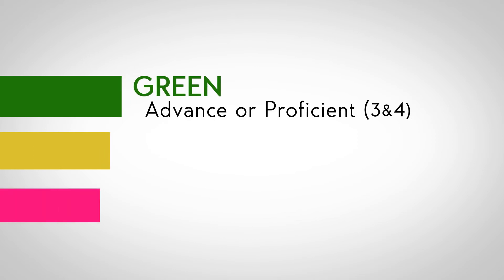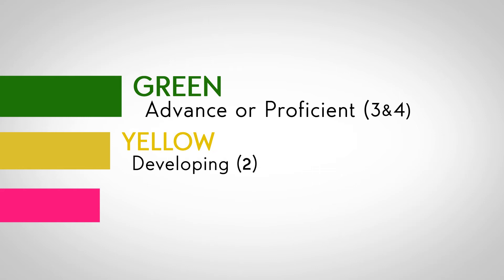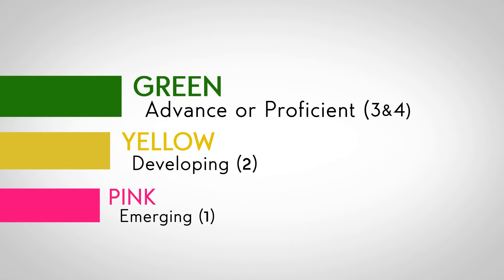We know that in the past it's worked really well when we let other people lead the discussion. So Robin, today, if you wanted to lead us in discussing our summative assessment data. We're just going to follow the steps as we usually do. We're going to use green for the advanced or proficient students — that's the threes and fours. Yellow for developing — highlight those students with a two. And any students that have a one, we're going to use the pink highlighter.